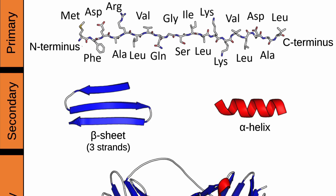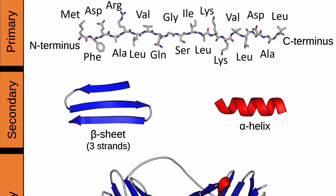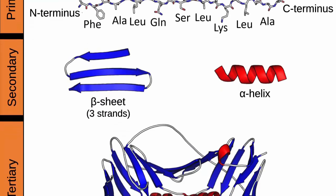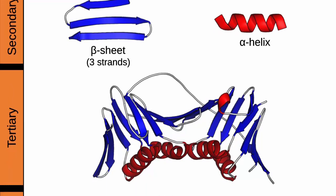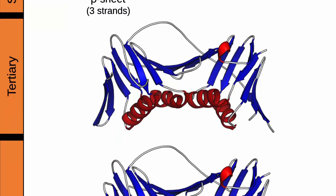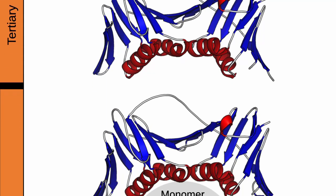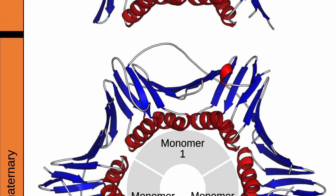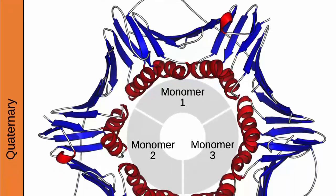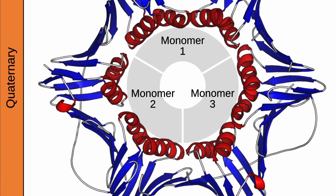The epigenome also plays a role in how chromosomes are organized in three-dimensional space within the cell nucleus. This spatial organization influences gene interaction and regulation.